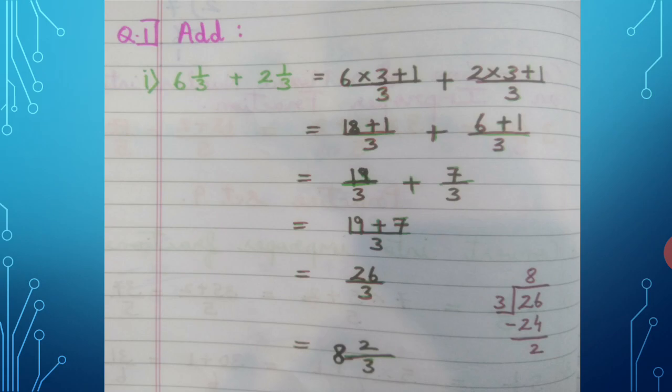6 × 3 + 1 upon 3, plus 2 × 3 + 1 upon 3. This equals 18 + 1 upon 3, plus 6 + 1 upon 3, which is 19 upon 3 plus 7 upon 3. Since the denominators are equal, we take 19 + 7 upon 3, which equals 26 upon 3.